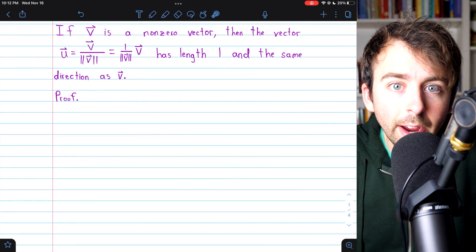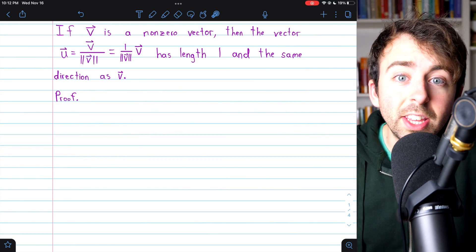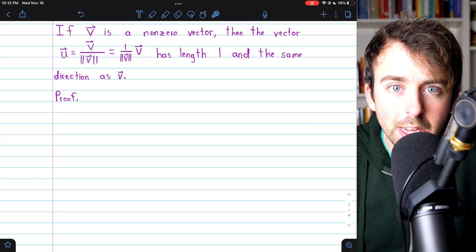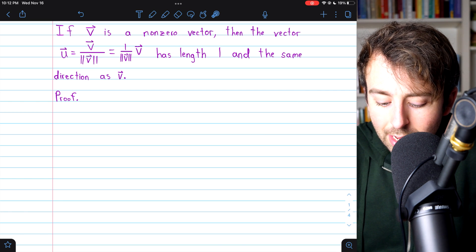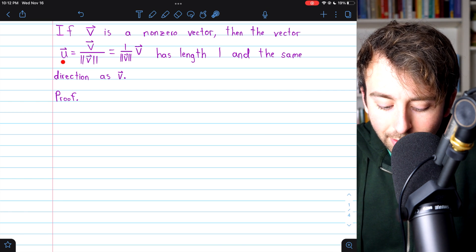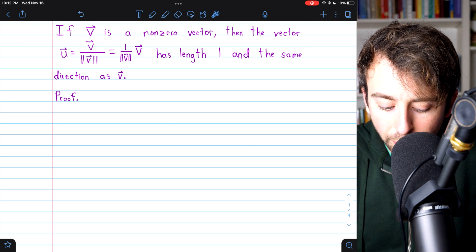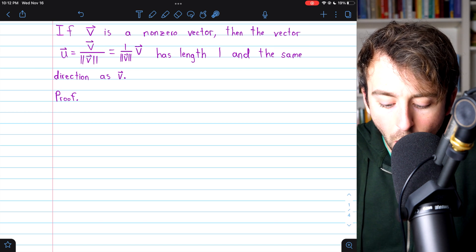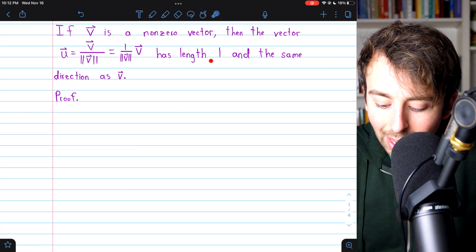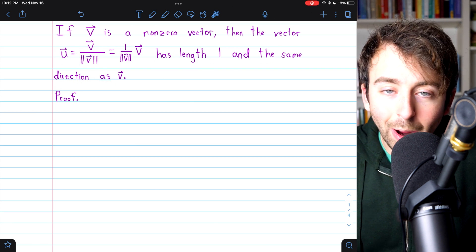So, how do we find such a vector? How do we find a unit vector in the direction of some given vector v? Well, if v is a non-zero vector, then the unit vector u is just the vector v divided by its own magnitude. This unit vector is going to have length 1 and the same direction as v.